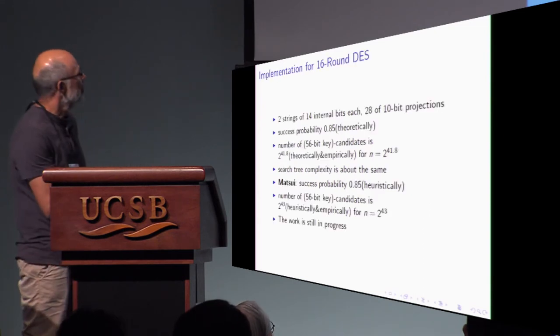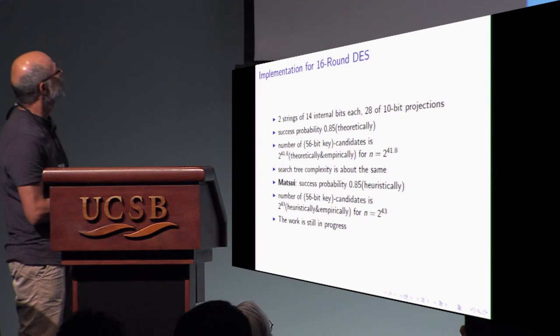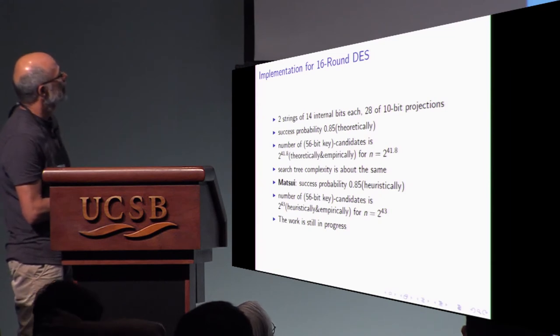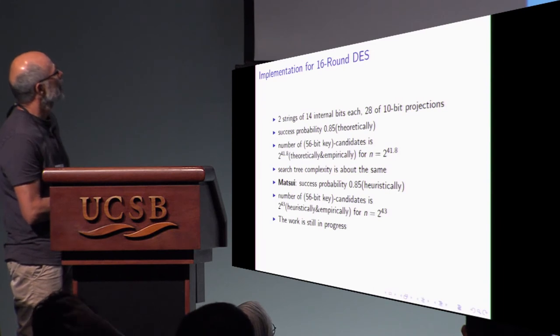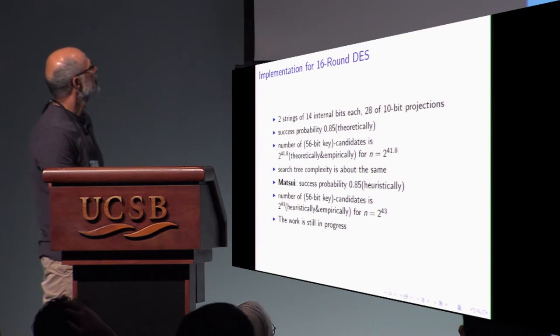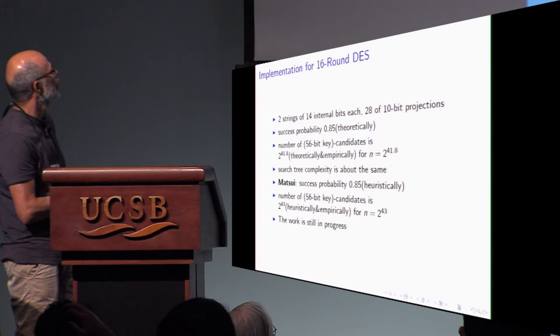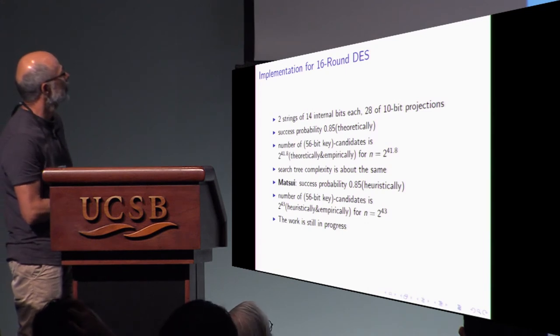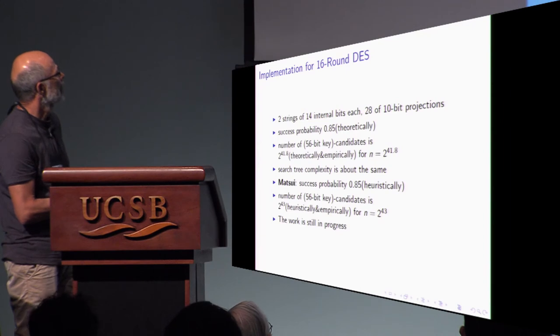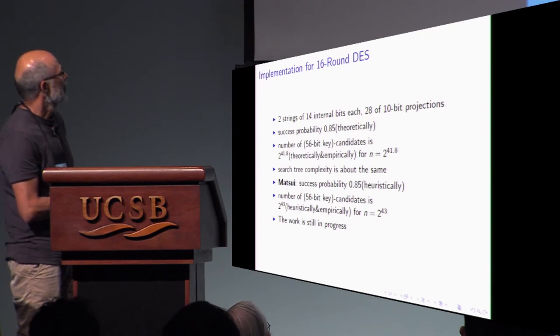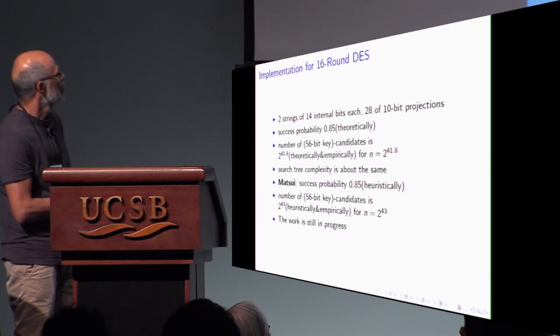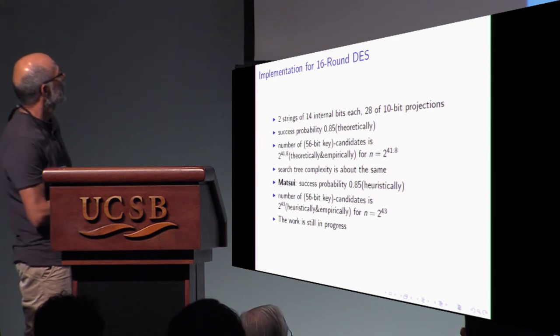We implemented this attack against full DES. We used 28 10-bit projections. And we computed success probability, we took at 85% as in Matsui's. And the number of key candidates, 56 bit candidates to brute force was 2 power 41.8. The number of plain texts 2 power 41.8. It may be compared with Matsui's success probability 85%, and the number of key candidates to brute force is 2 power 43, and the number of plain texts 2 power 43. You see that is a little bit better.